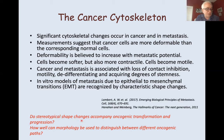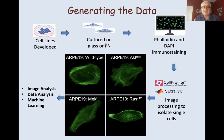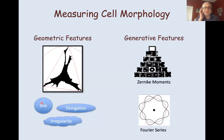So we ask: do stereotypical shape changes accompany oncogenic transformation and progression, and how well can morphology be used to distinguish between different oncogenic paths? We do very simple experiments — we culture cells on substrates, image them, stain actin, and look at them. Everything I'm talking about is in fixed cells; we've just recently started working on live cells. We culture them on glass or fibronectin-coated substrates, fix them, stain them with phalloidin and DAPI. Then we take images using a Keyence microscope and use custom-written MATLAB as well as CellProfiler for image processing and data analysis.